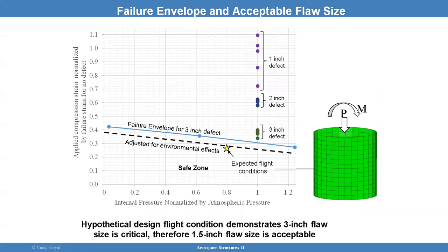How do you use that data? You apply compression to the model and apply internal pressure to the model in the core. Put disbonds of one-inch, two-inch, and three-inch. We're able to draw a line at the three-inch for the design limit. You adjust for environments, and you want your design to always fall within acceptable limits, while ensuring your NDE is capable of finding these flaws as well.